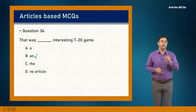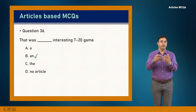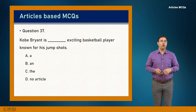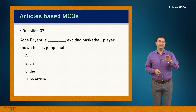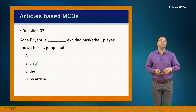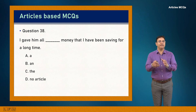Question 36: That was dash interesting T20 game. 'Interesting' starts with a vowel sound, so 'an' is used. Answer is B: 'That was an interesting T20 game.' Question 37: Kobe Bryant is a dash exciting basketball player known for his jump shots. 'Exciting' starts with a vowel sound, so answer is B: 'Kobe Bryant is an exciting basketball player.'